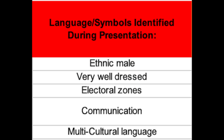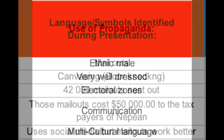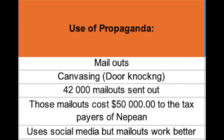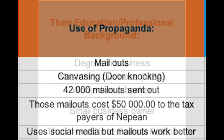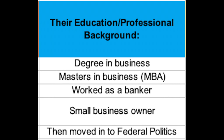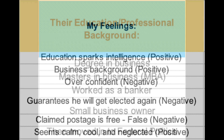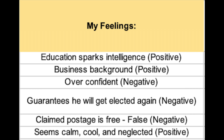All of my main findings and analysis came from four main areas: the language and symbols the speaker used during the presentation; how they used propaganda in their political career; their education and professional background before entering politics; and most importantly, tying all of these together to look into my own feelings and asking myself — based on these categories — is this an authentic politician or not?